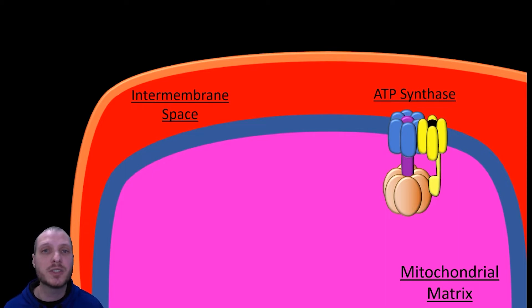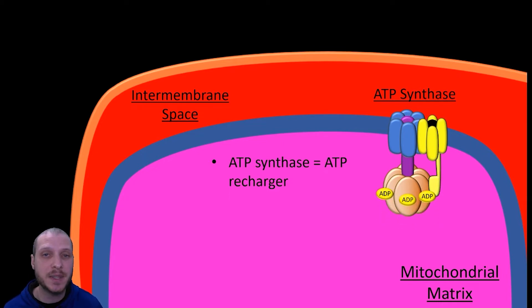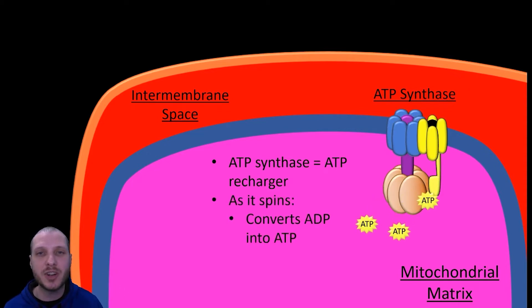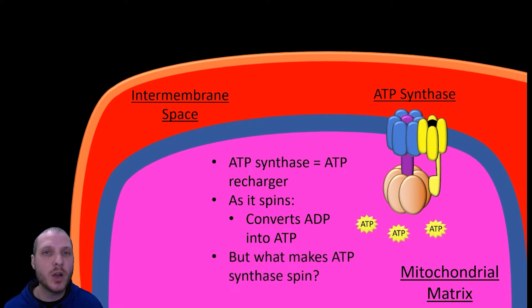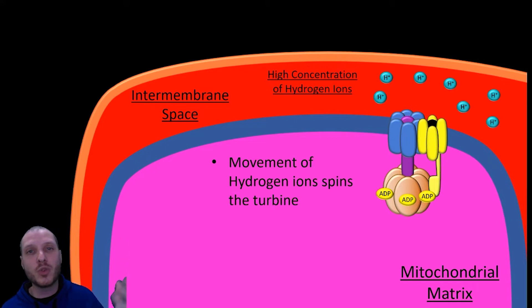Now we can introduce the first structure associated with energy production: ATP synthase. It's ATP synthase's job to be the recharging station for ATP. ADP comes back into the mitochondria and attaches to ATP synthase, which spins like a turbine — and as it spins, it adds the phosphate molecule back onto ADP to recharge it to ATP. To compare how ATP synthase works, think of a hydroelectric dam where water stored on one side rushes through the turbine and spins it, generating energy.